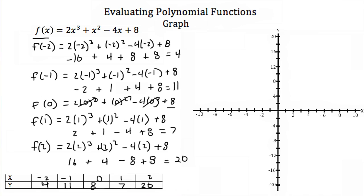I'll put that in our table too. So now I've got 5 points — x and y values — that I can plot on our graph. The first one: x = −2, y = 4. The next: x = −1, y = 11. Then (0, 8), (1, 7), and (2, 20) is way up here.